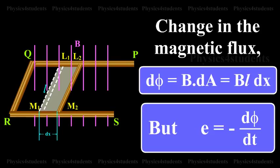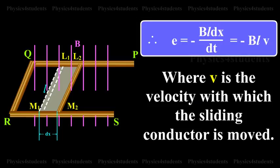But, E is equal to minus dΦ divided by dt. Therefore, E is equal to minus BL dx divided by dt is equal to minus BLv, where v is the velocity with which the sliding conductor is moved.